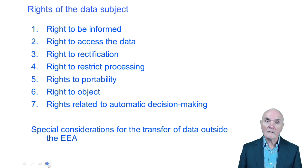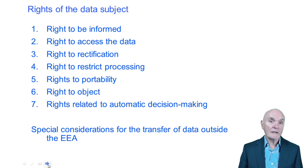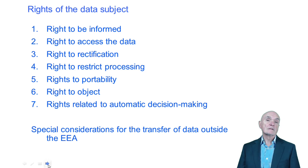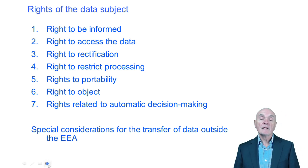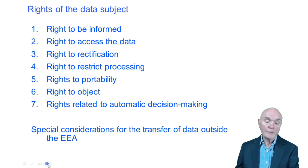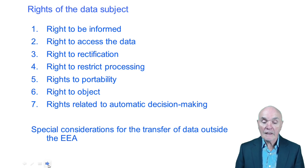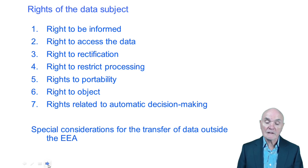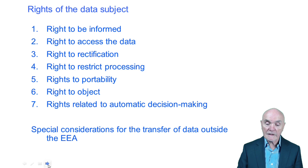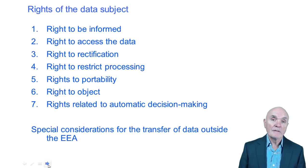We have the right to be informed that data is being held about us, the right to see and access it. If it's wrong, we have the right to insist it is corrected — rectified. We can ask people to restrict processing — don't use it for certain purposes. Rights to portability mean that if someone has legally collected information about us, we're entitled to receive that information in a convenient form. We have the right to object to the information being processed in a particular way, or to say: you're holding the data but do not process it anymore.